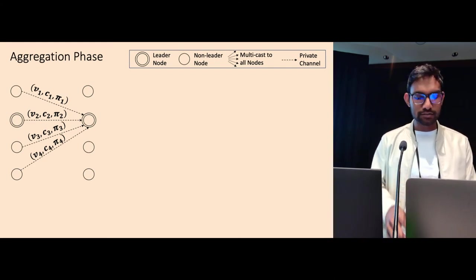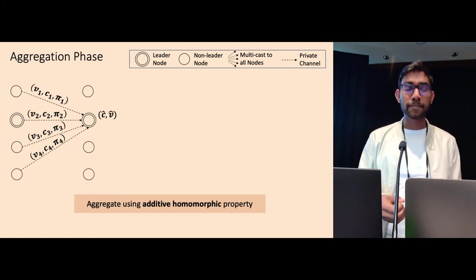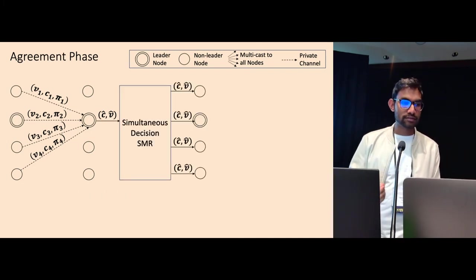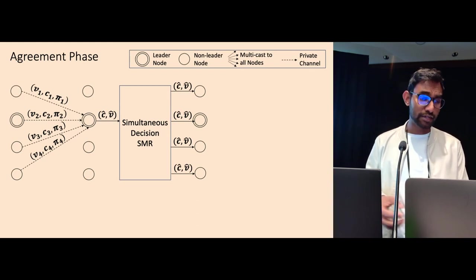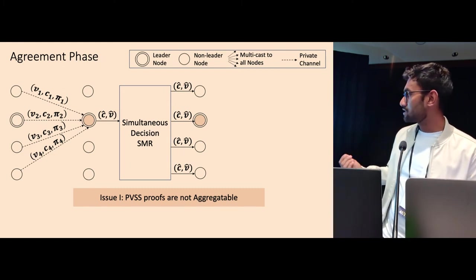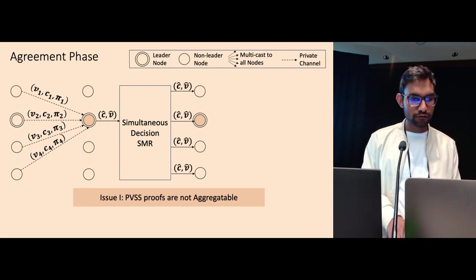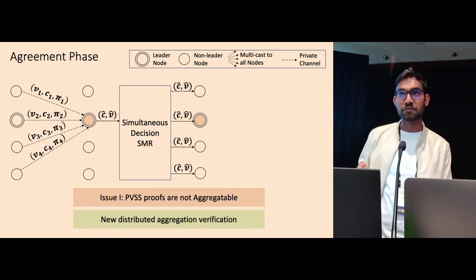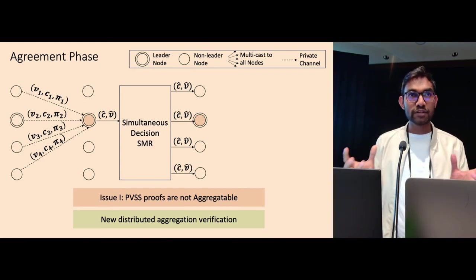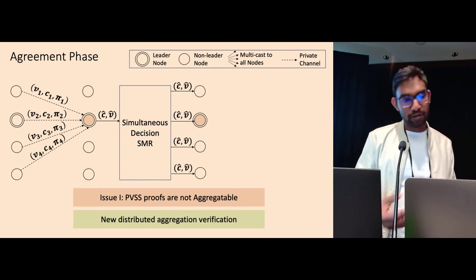During the aggregation phase, the leader will aggregate these shares using the additive homomorphic property of the PVSS commitment and also the PVSS encryptions. During the agreement phase, the leader will send this aggregated commitment and aggregated ciphertext using a simultaneous decision SMR. There is one issue. The PVSS proofs are not aggregatable. So how do we ensure that the leader indeed did the aggregation correctly? So for this, we have a new distributed aggregation verification mechanism where every node only checks a part of the aggregation mechanism and they collectively ensure that the global aggregation was done correctly. And this is very crucial for our random beacon protocol.